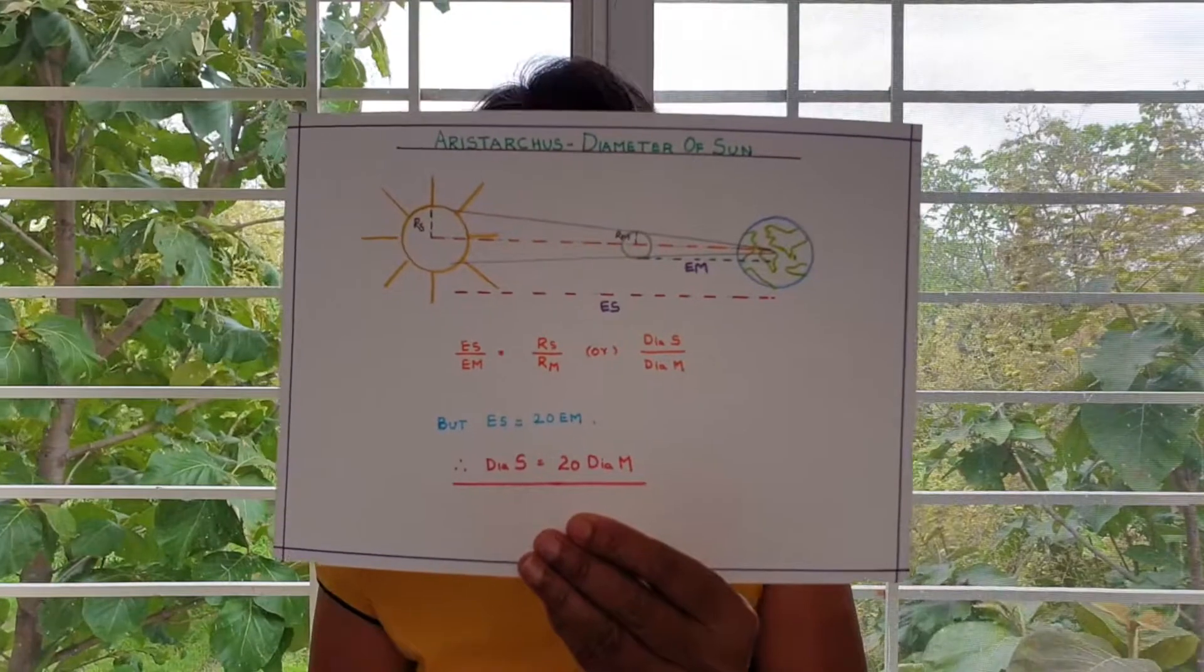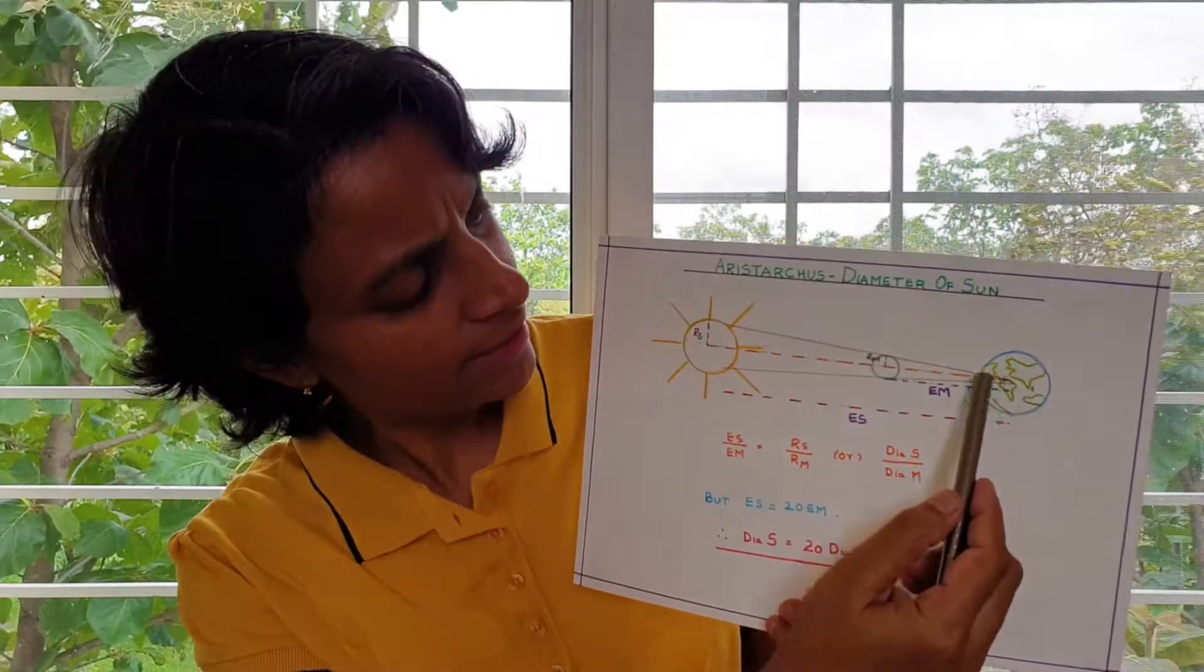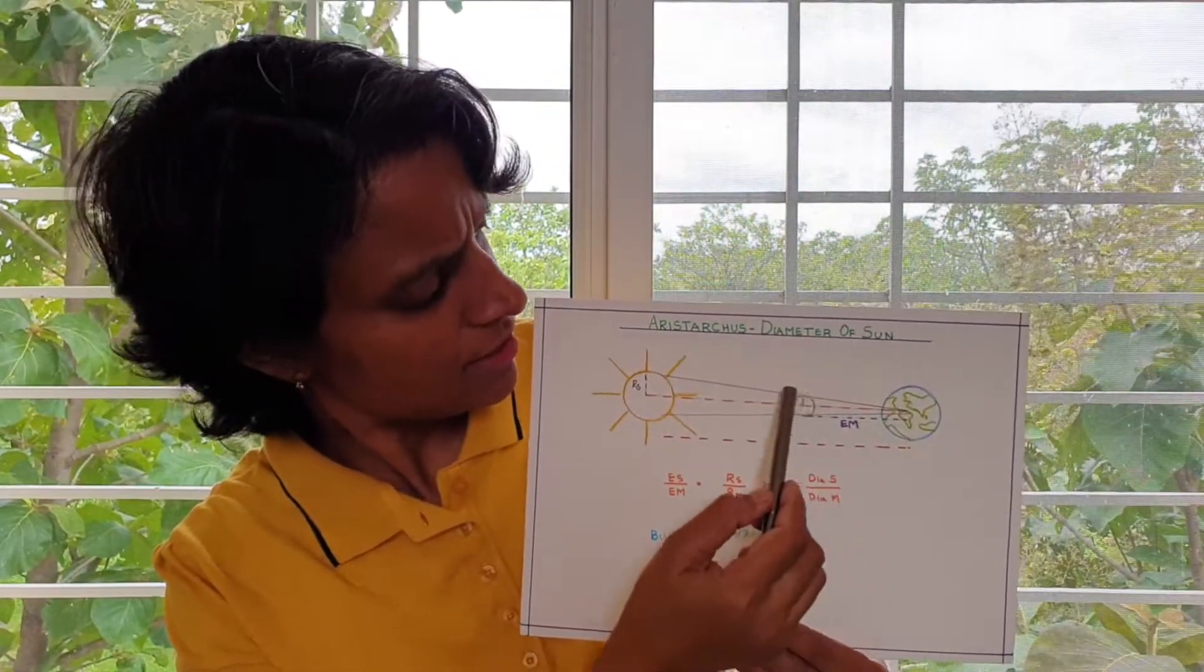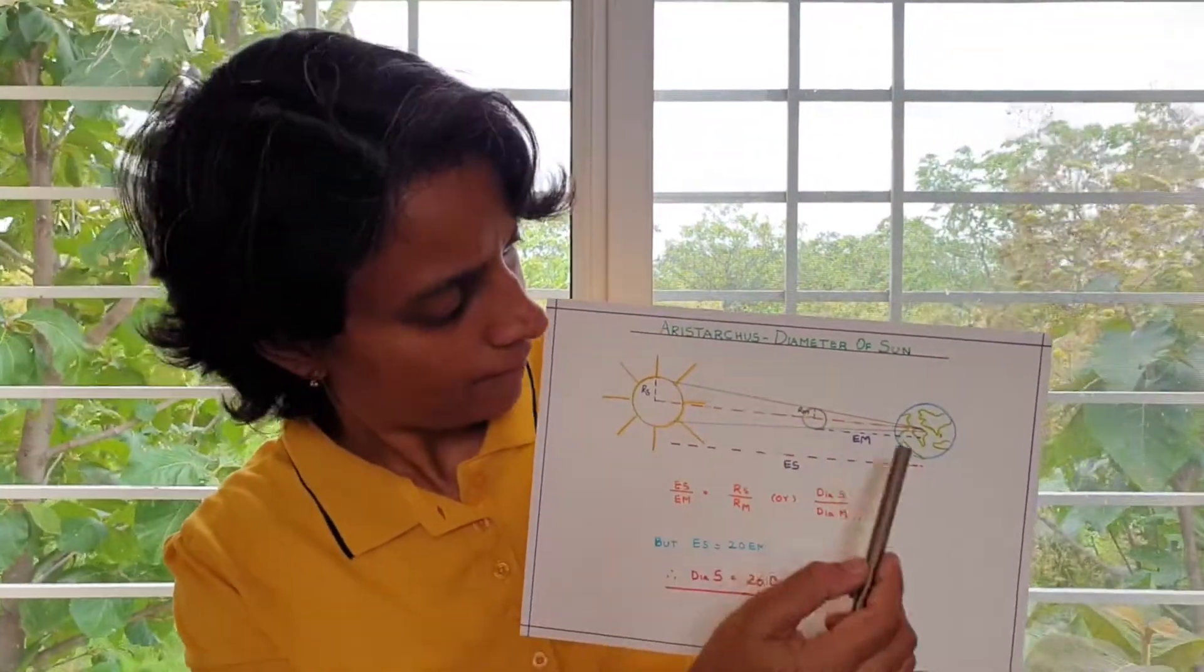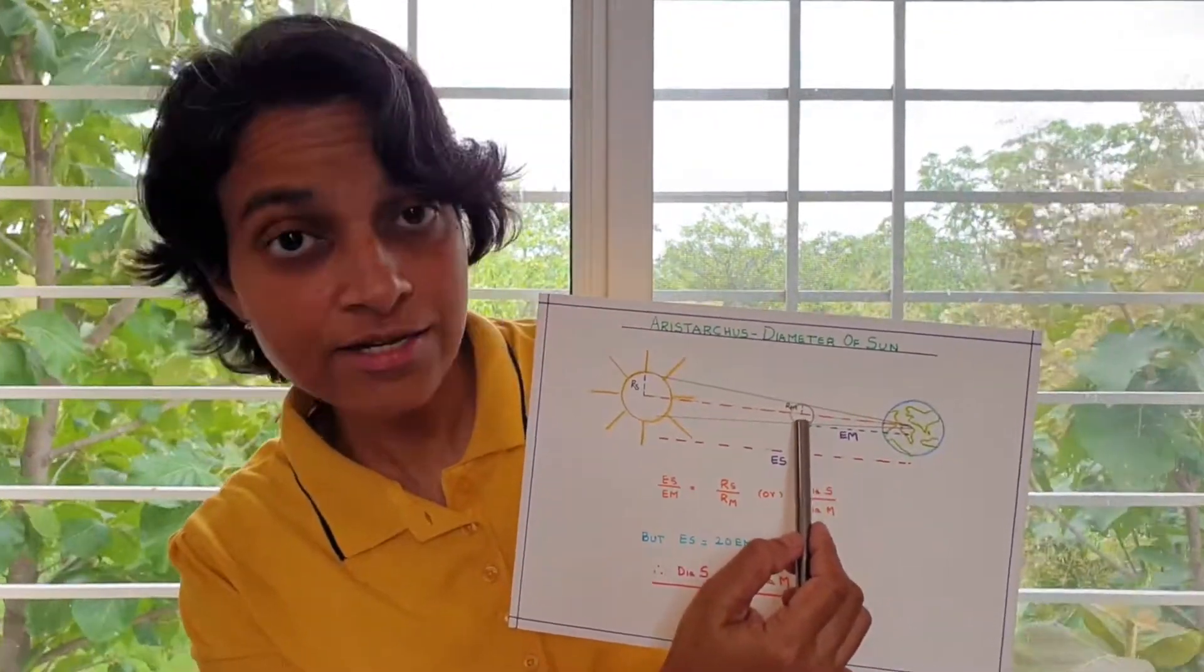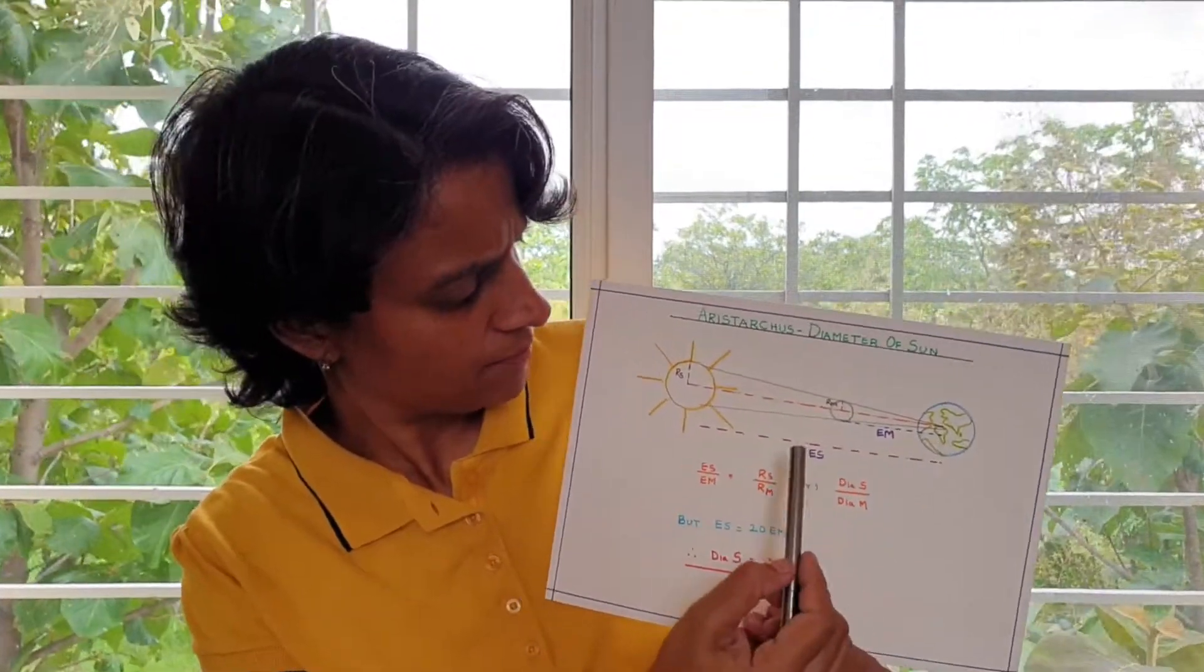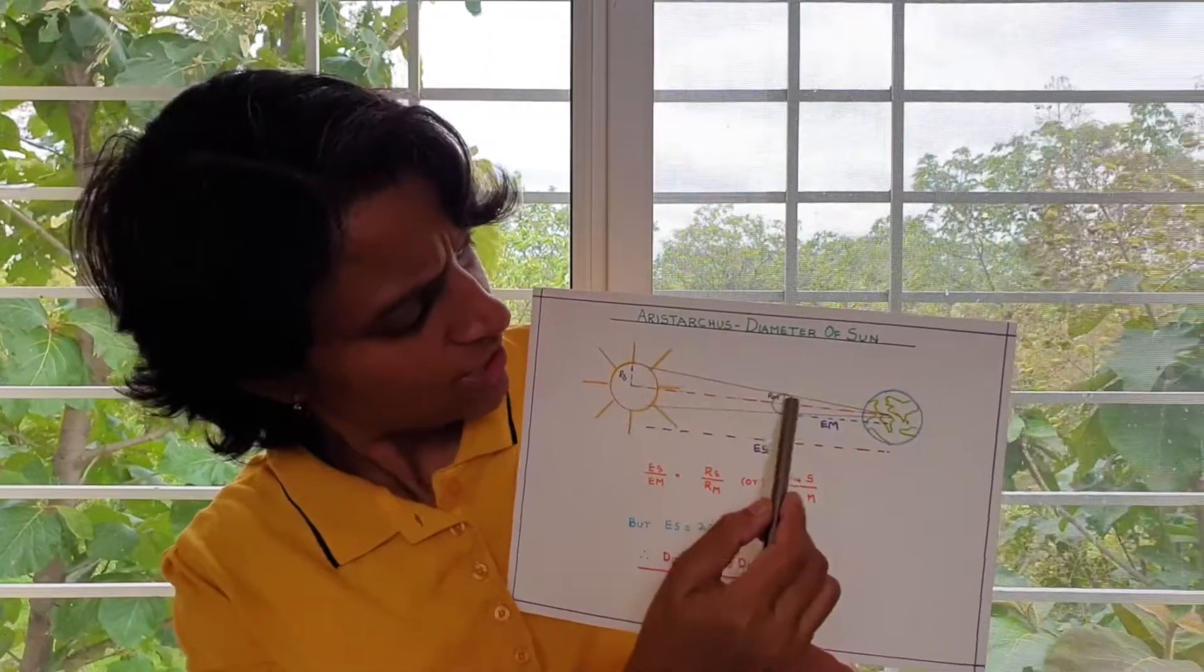If you can see in this diagram, there is a straight line passing between earth, moon and the sun. And then there is a line touching the edge of the moon and going to the sun, because this is what is blocking our view. And then another line touching the other edge of the moon and going to the sun. And this is how it blocks the view of the sun from the earth. If you see this, there are two triangles here, one big triangle, one small triangle.